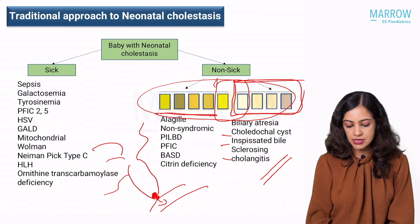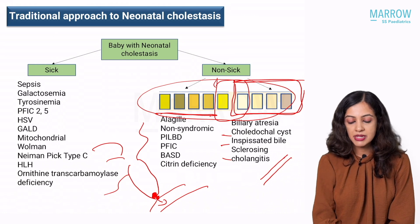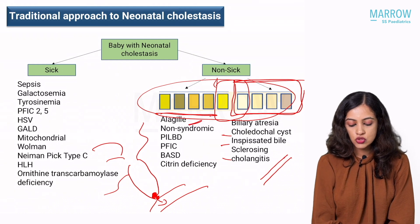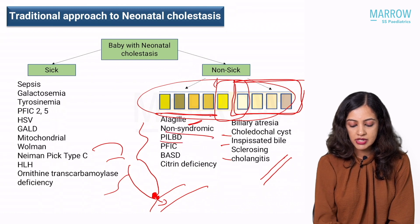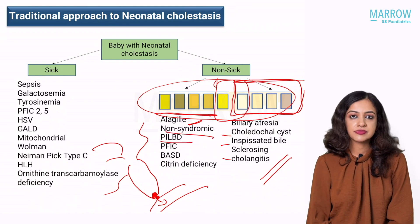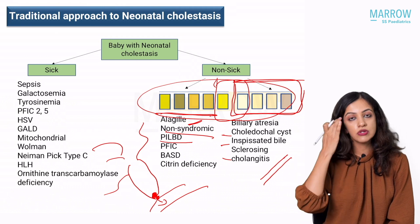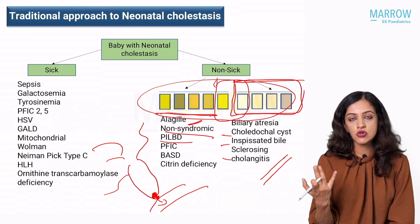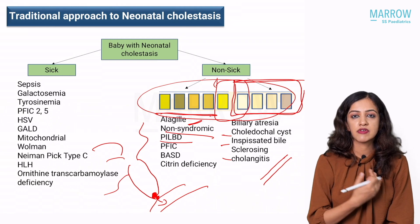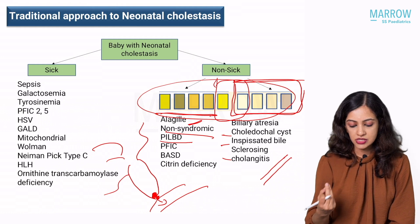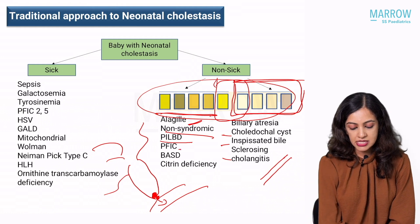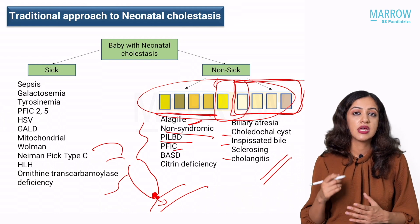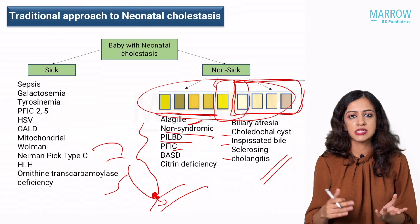You should also remember that any intrahepatic cause, if severe enough, can sometimes cause pale stools, and with time it can become pigmented as you treat these babies. If the stools are pigmented in a well baby, the causes to think of include Alagille syndrome and non-syndromic causes of paucity of intrahepatic bile ducts (PILBD). Alagille syndrome is traditionally the syndromic cause of PILBD. Non-syndromic causes include cystic fibrosis and TORCH infections. Then PFIC — progressive familial intrahepatic cholestasis — bile acid synthetic defects, and citrin deficiency can present with simple cholestasis and pigmented stools.